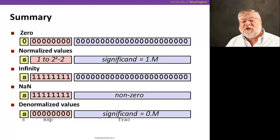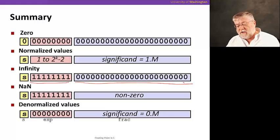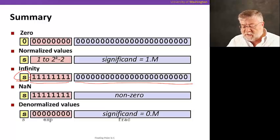We also mentioned that we reserve the exponent of all ones to represent positive and negative infinity. Okay, and we're actually going to put a further condition on that, that it's gonna be all ones and all zeros in the fractional part. So all ones in the exponent, all zeros in the fractional part, and of course the sign can be positive or negative.